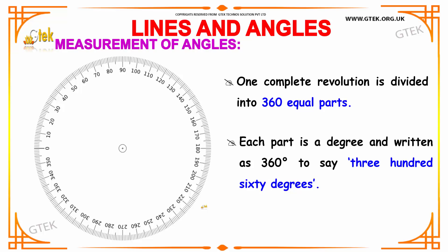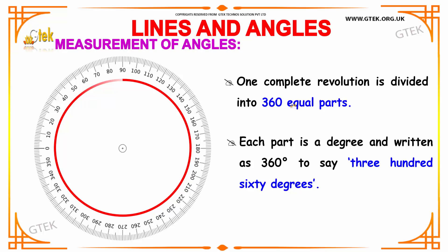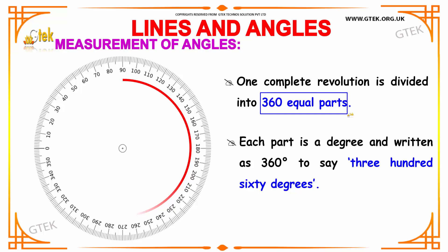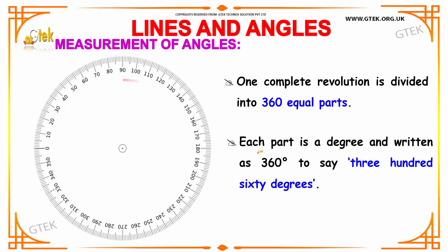Next we are going to see how to measure angles. One complete revolution is divided into 360 equal parts. As you can see, one complete revolution is 360, and it is written as 360 degrees. This is how we read it: 360 degrees.